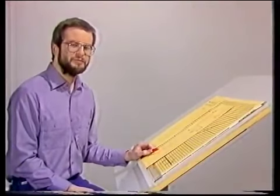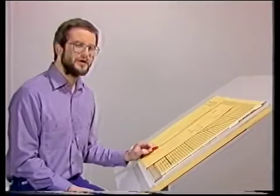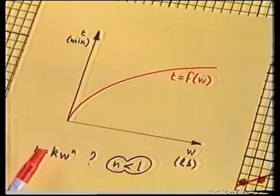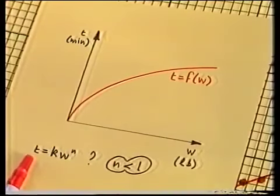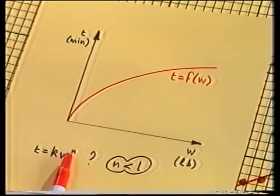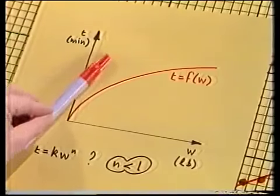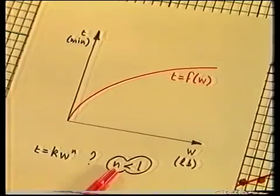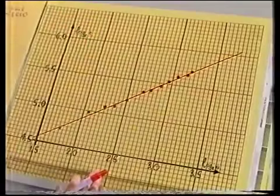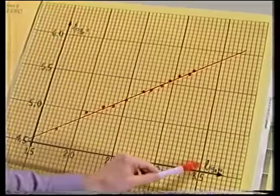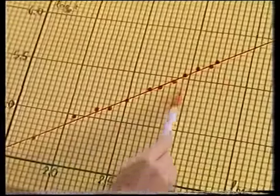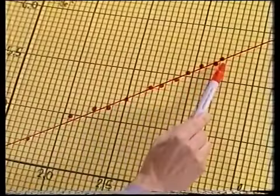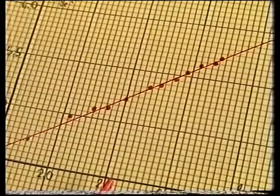Let's suppose the graph of our function is indeed a curve. According to what you've seen earlier in the unit, it could be the graph of a power law: T equals k times W to the n, where k and n are constants. For the slope to decrease as we move from left to right, we'd need n less than 1. The way to test for a power law is to draw a log-log plot. I've already done this for our data — a graph of log T against log W — and I think you'll agree that a straight line is a pretty good fit to these points, meaning we do have an approximate power law connecting T and W.